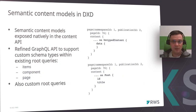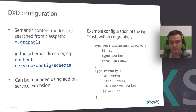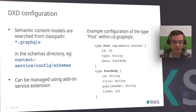There are various ways semantic models can be used in content delivery. They can be exposed natively in the content API. You can customize types within root queries — as you can see on the example, there is a custom type 'post'. We also introduced the option to have new root queries. We use standard GraphQL schema language to define semantic models. By default, we search for such schemas under the content service config schemas folder, and you can also manage your GraphQL schemas via the add-on service. These are the two places where the mapping is defined.